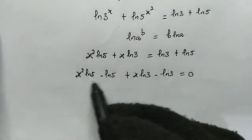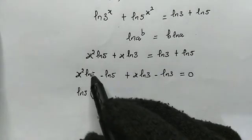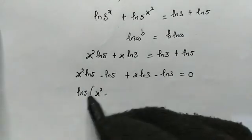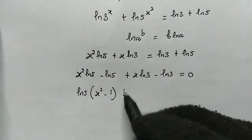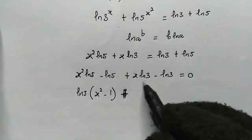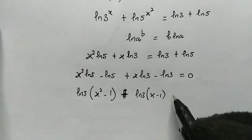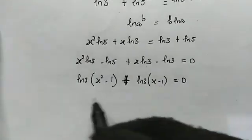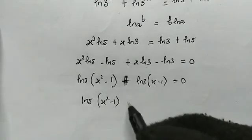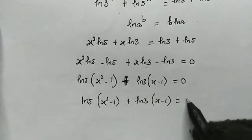Natural log of 5 is common on the first pair, so we factor it out, giving natural log of 5 times (x squared minus 1). Then natural log of 3 is common on the second pair, giving plus natural log of 3 times (x minus 1), and this equals 0.